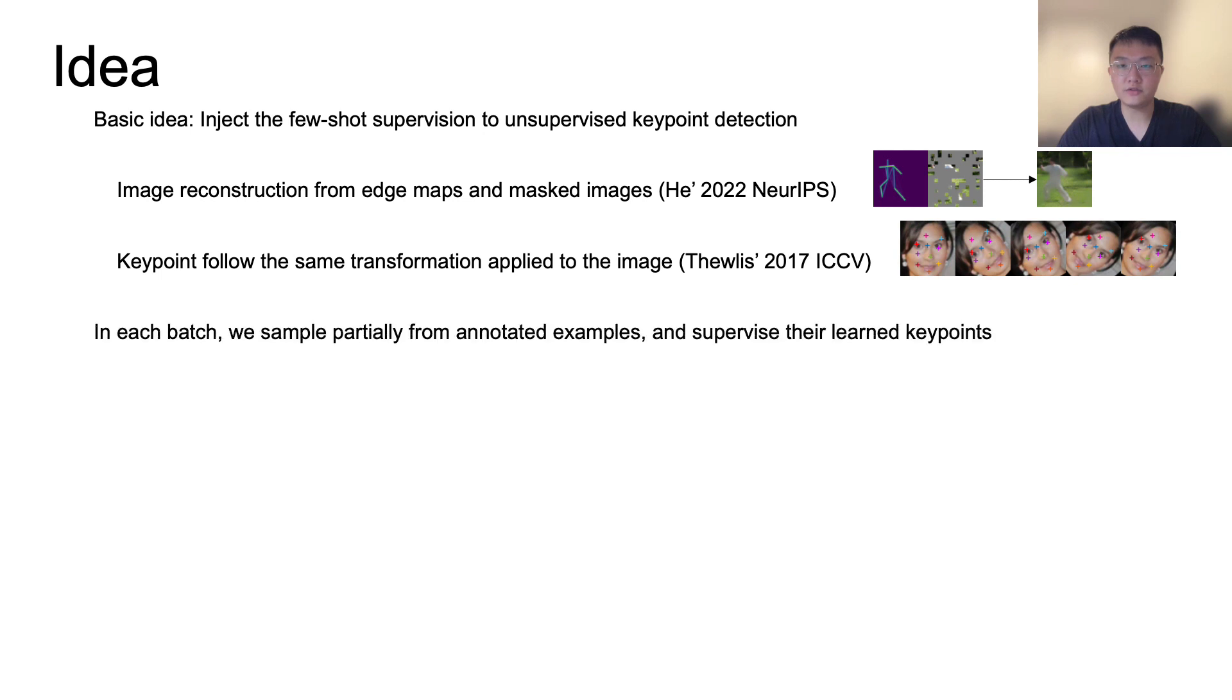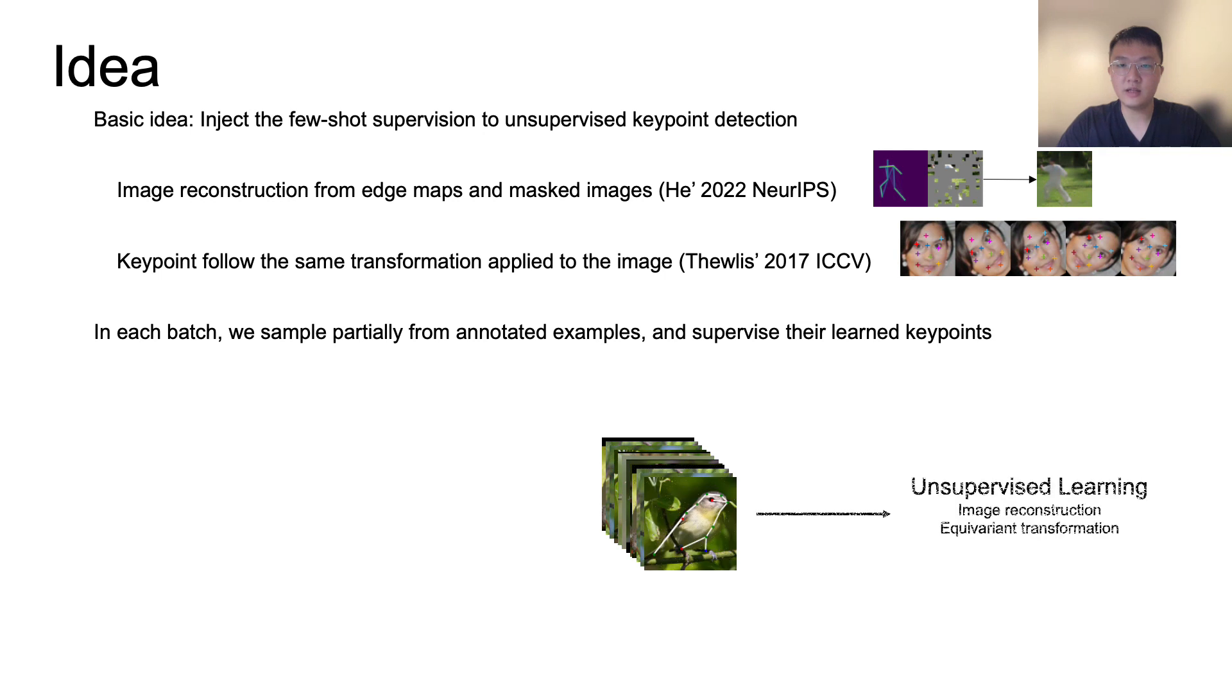To inject few-shot supervision in each batch, we sample partially from unannotated examples and partially from annotated examples. They are together constrained by unsupervised learning, and we apply 2D keypoint supervision on the annotated examples.